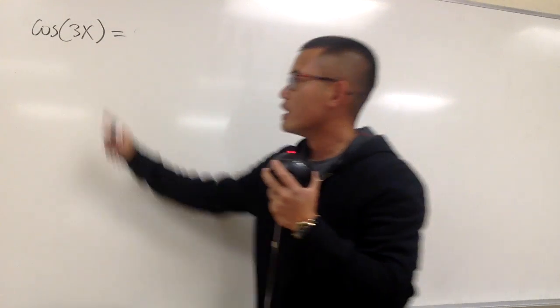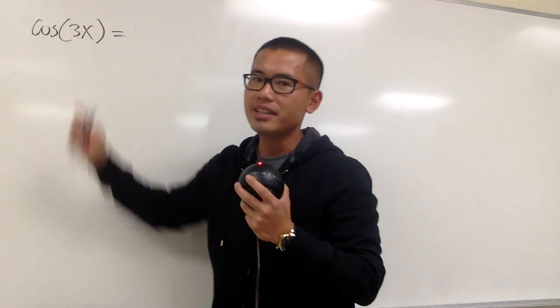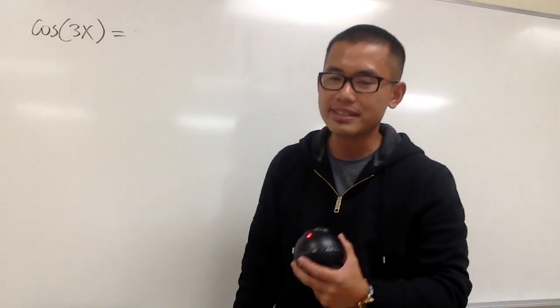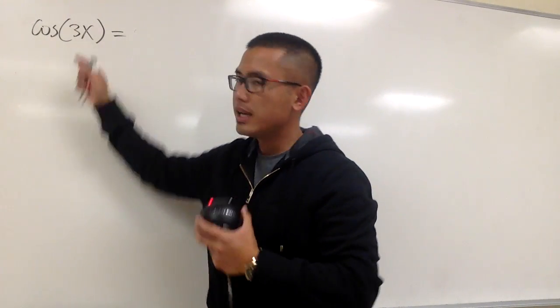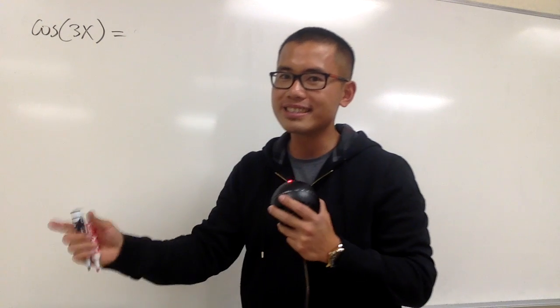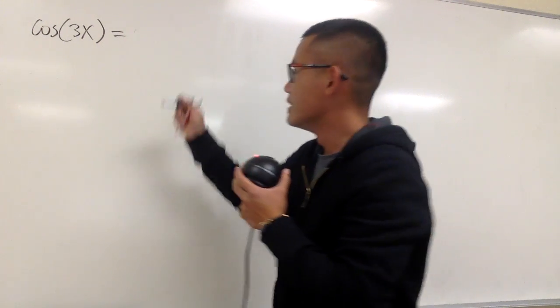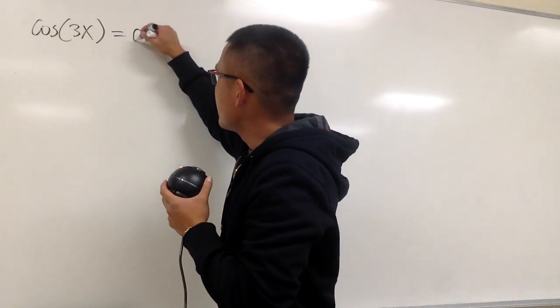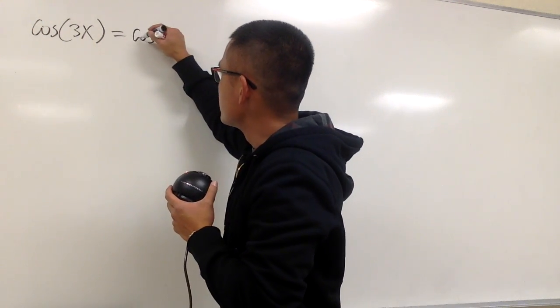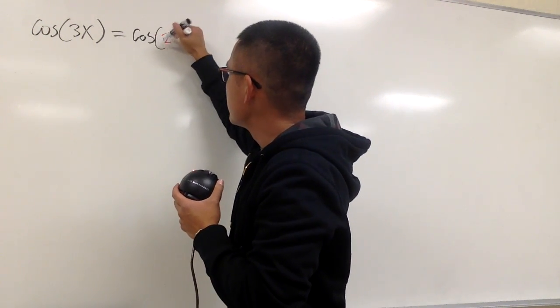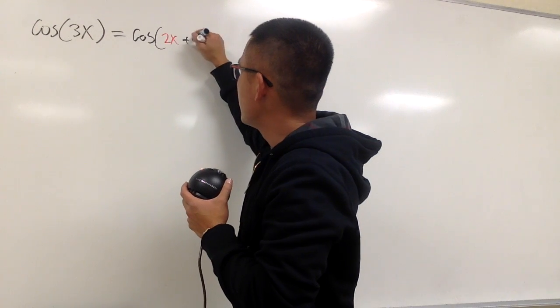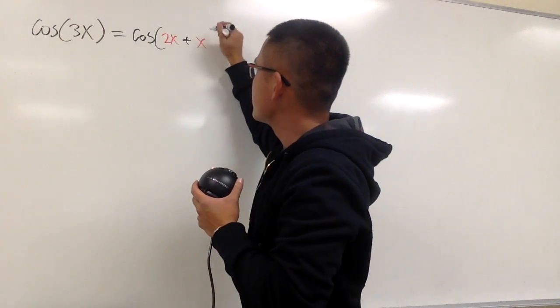We are going to write cosine of 3x in terms of cosine x. Let's go ahead and break down the 3x as 2x plus x. This is the same as cosine of 2x plus x.